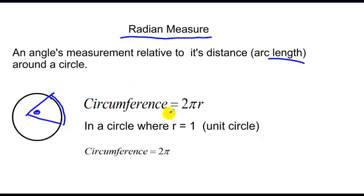We know that the circumference of a circle is 2 pi r. Some of you will know it as pi d, but we usually use 2 pi r. And in a circle where the radius is equal to 1, we call that the unit circle. The circumference is 2 pi because our r value is 1.